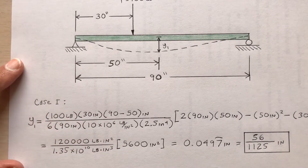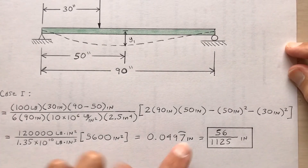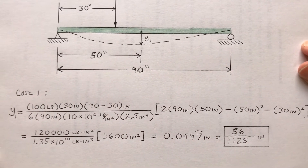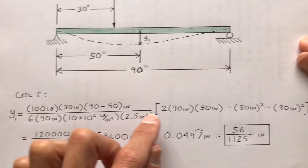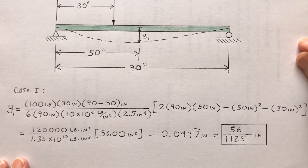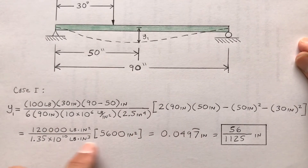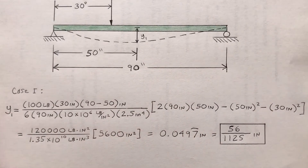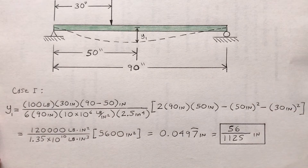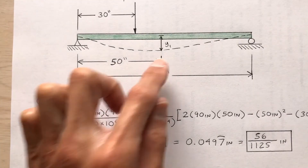Plugging all the numbers into the Case 1 formula — pause the video if needed — the units work out to inches, giving a displacement of 56/1125 inches, or about one five-hundredth of an inch at location x equals 50 inches.